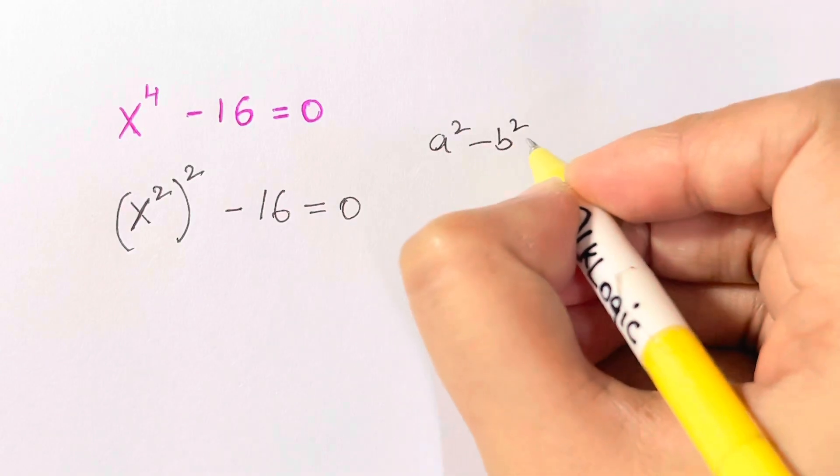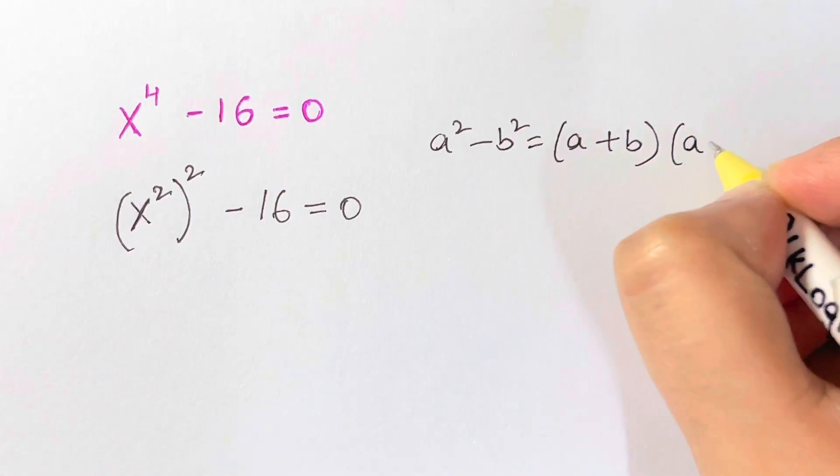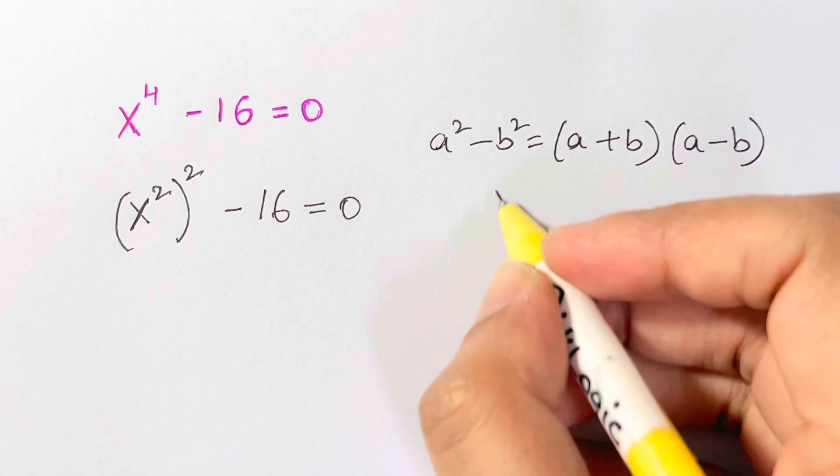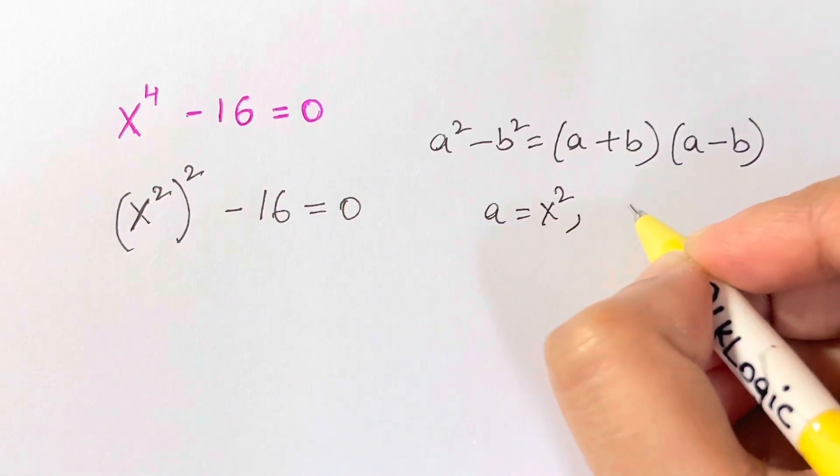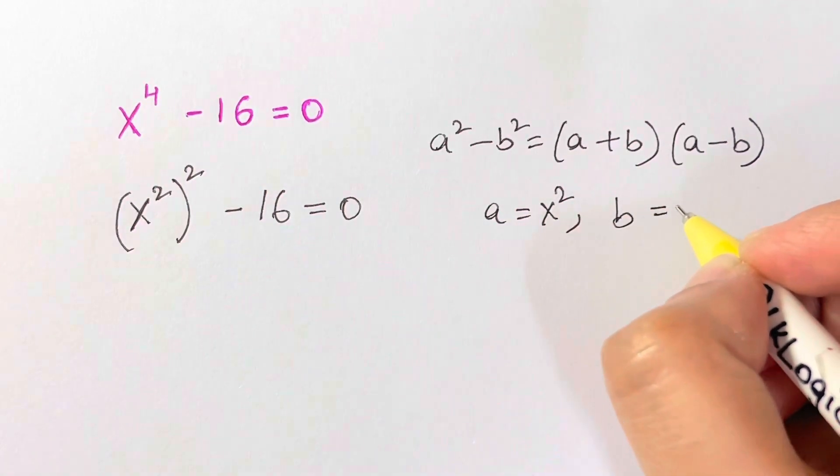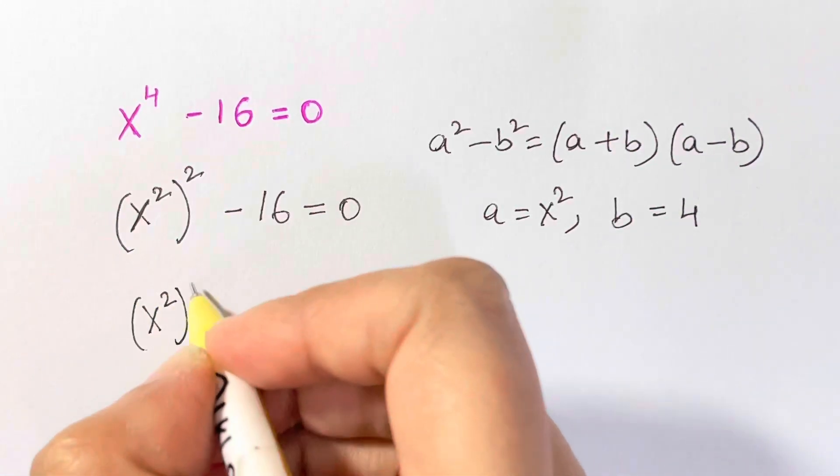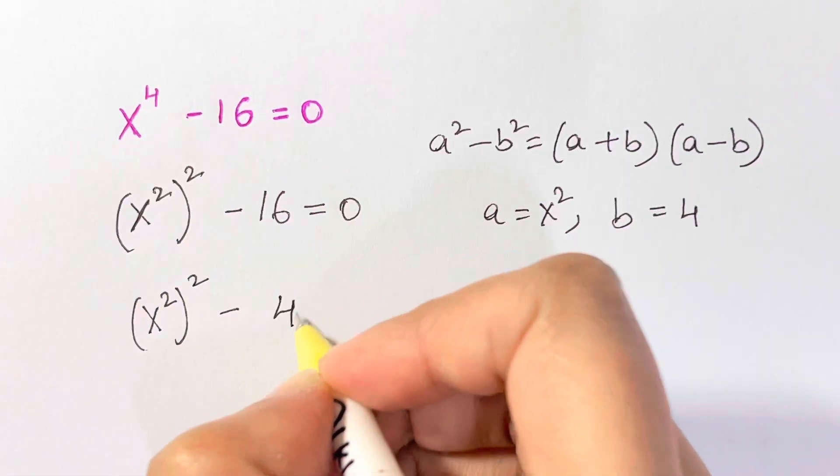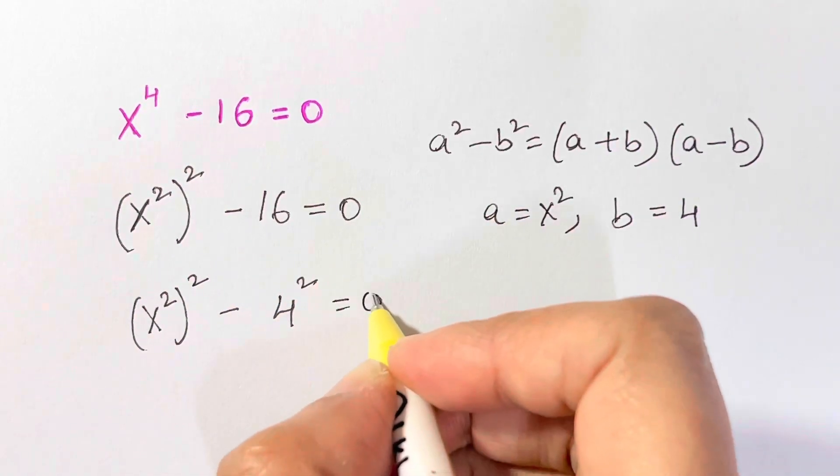a squared minus b squared is equal to (a plus b) times (a minus b). Now I'm going to substitute. What is a here? It is x squared, and b is 4. I'm going to write that again: (x squared) squared minus 4 squared. So we have a squared minus b squared is equal to 0.